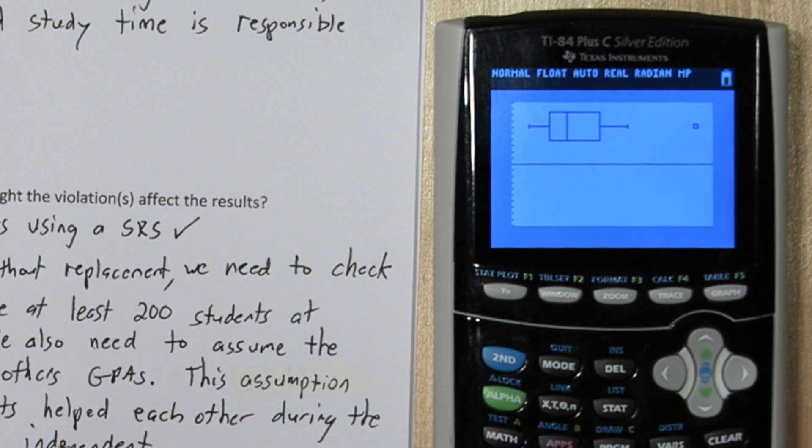Alright, right there we have an outlier. So we're in violation of the normal condition, and we can't use T procedures. This affects our results because our p-value from part A, if T procedures were used, is invalid.